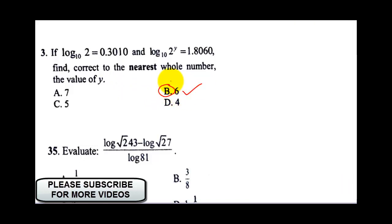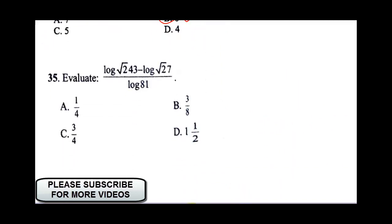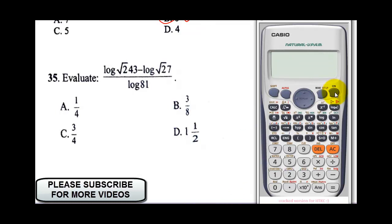Now to evaluate this last equation, all you need to do is, now, notice this is in the form of A over B, so the first thing I'll do is to bring in my numerator and my denominator, so I'll put my log, okay, this will be root, 2, 4, 3, I'll close my bracket.